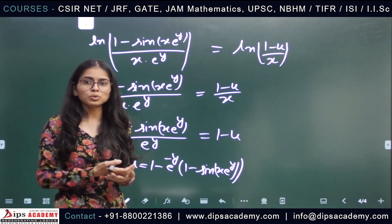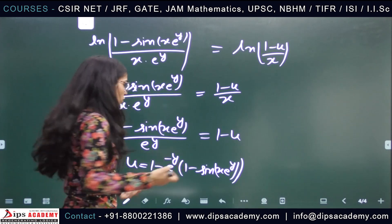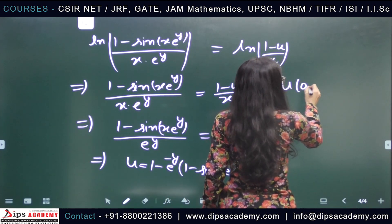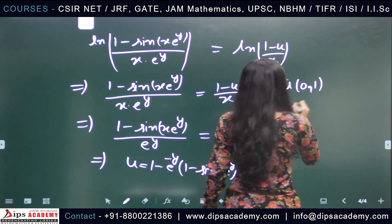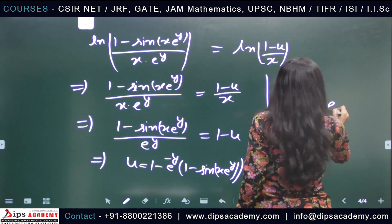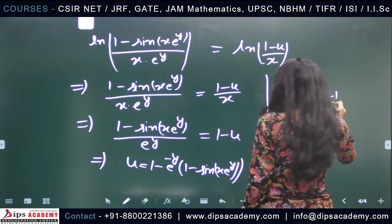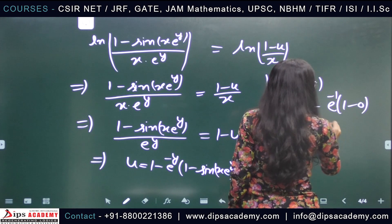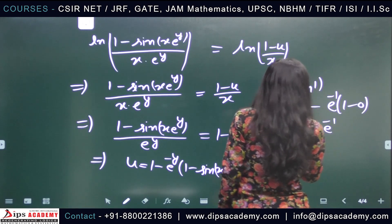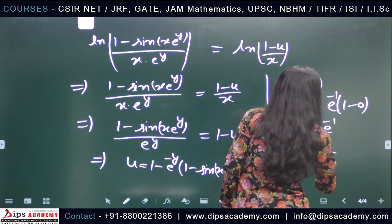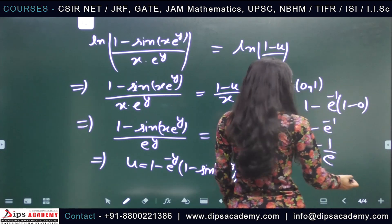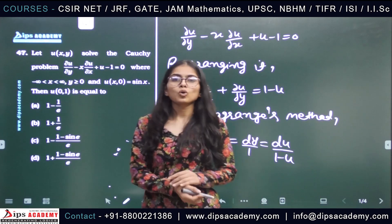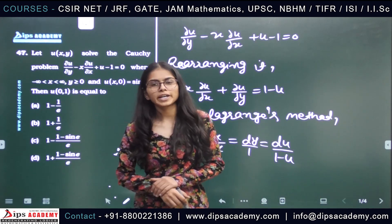We have to find the value of u at (0, 1). Substituting x = 0 and y = 1: u(0, 1) = 1 − e^(−1)·(1 − 0) = 1 − e^(−1) = 1 − 1/e. So the answer is 1 − 1/e, which corresponds to option A. Option A is the correct answer.